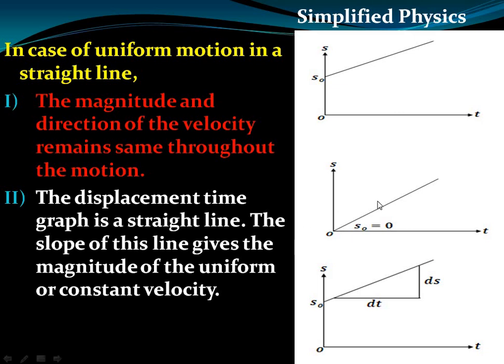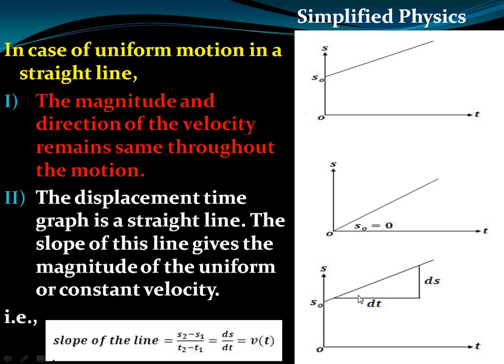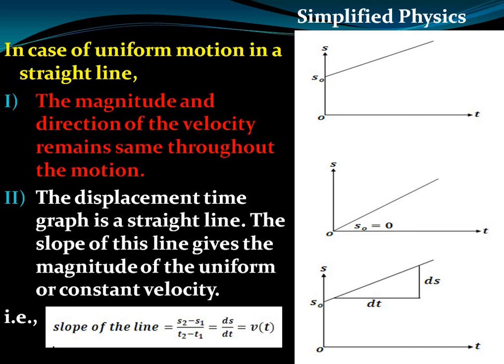The slope of the displacement-time line gives the magnitude of the uniform or constant velocity. In general, uniform motion has a displacement-time graph as a straight line, and we can find the slope of this line. The slope gives the velocity: uniform velocity v equals ds by dt.